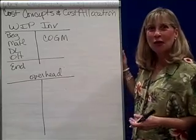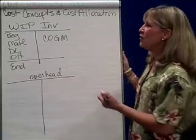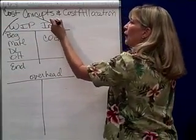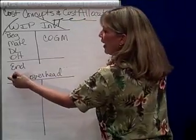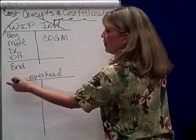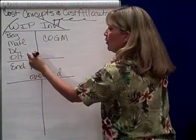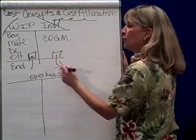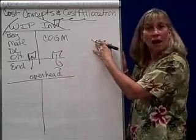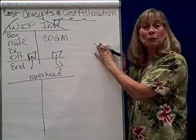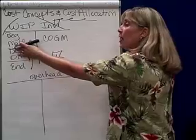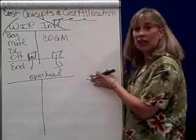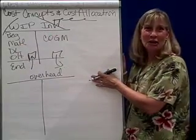The cool thing about work in process inventory is it's basically the factory. If you think about a factory, it has an indoor and an outdoor — that's work in process. What you see coming in are all your ingredients, and what you see coming out are your products.